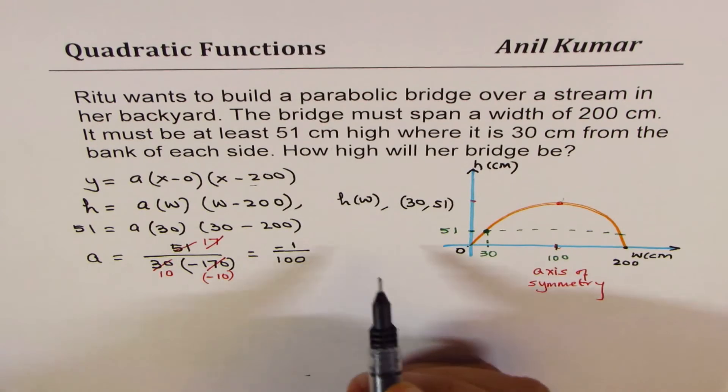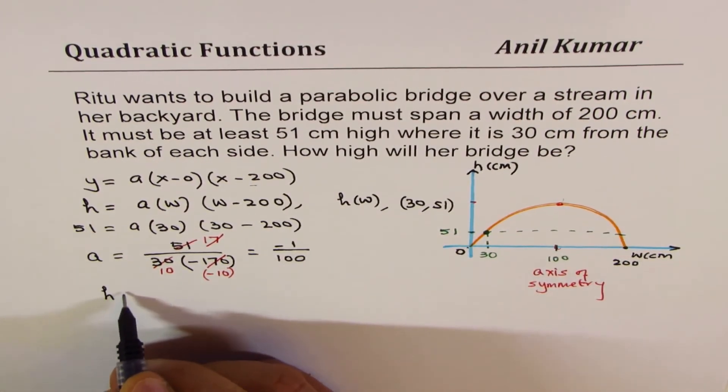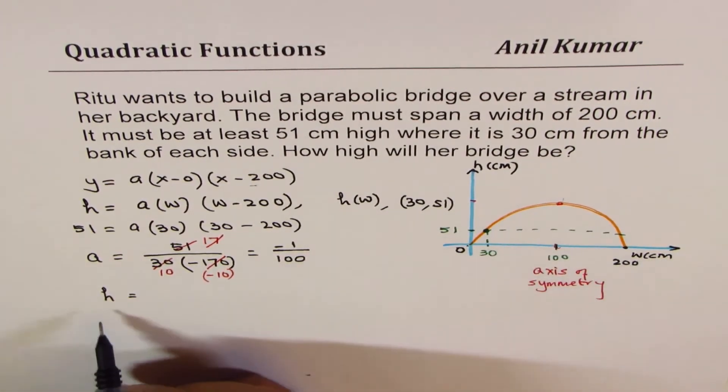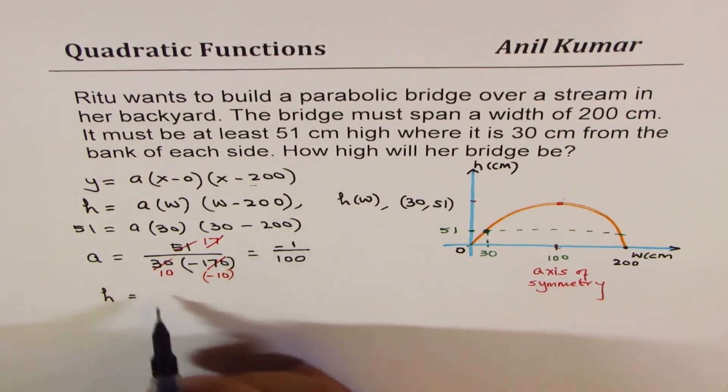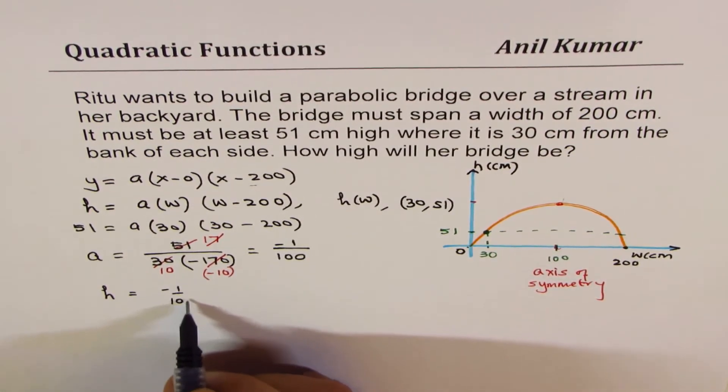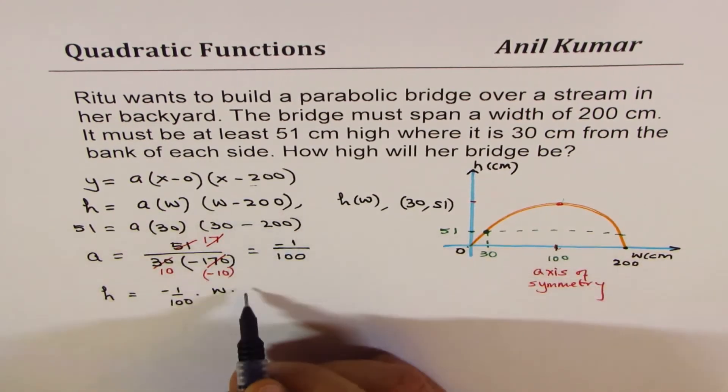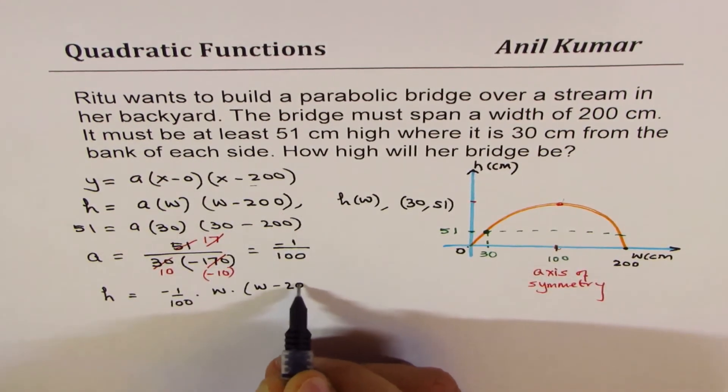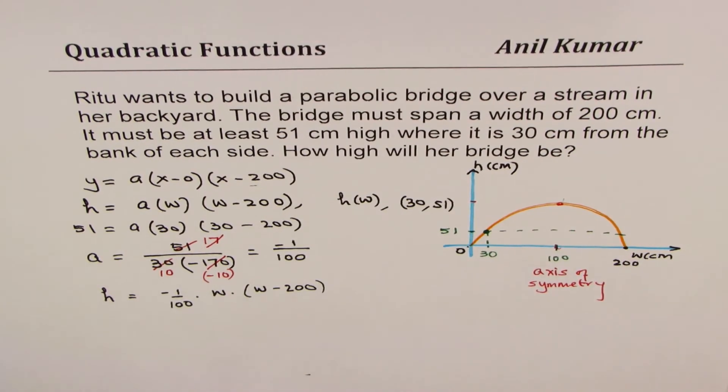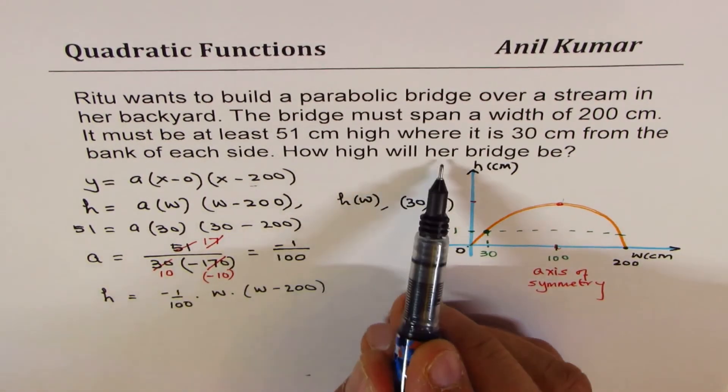So now I can write height of this bridge as a function of width w as minus 1 over 100 times width times width minus 200. So that becomes the function.